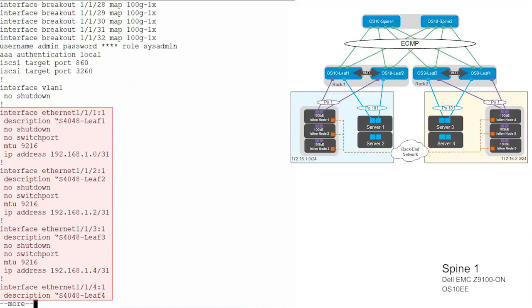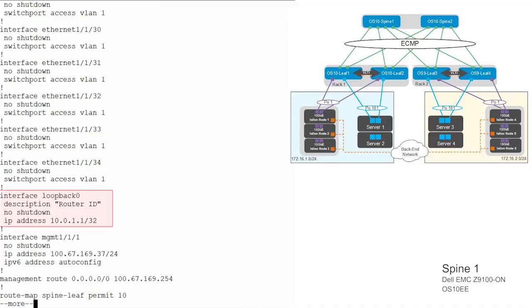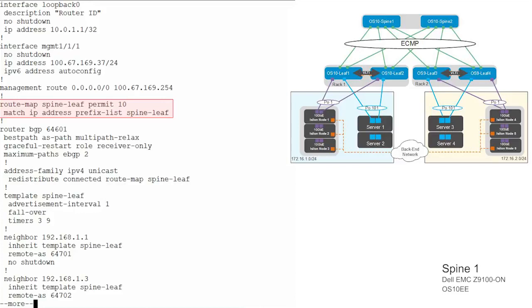Configure the point-to-point interfaces 1 through 4 and assign the IP address. Configure a loopback address, which will be used as a router ID while configuring BGP. Configure a route map and IP prefix list to redistribute connected interfaces. On spine switches, it redistributes the loopback addresses.